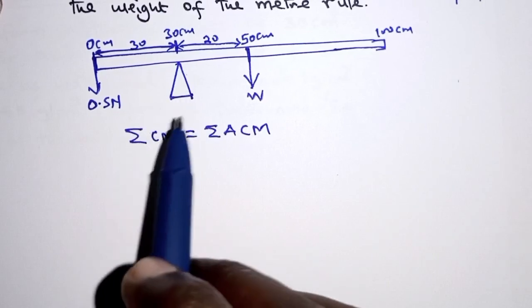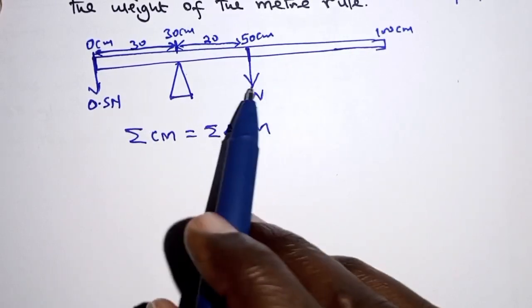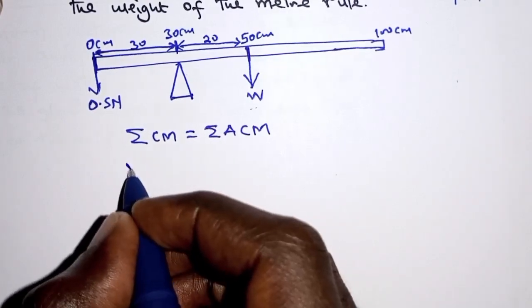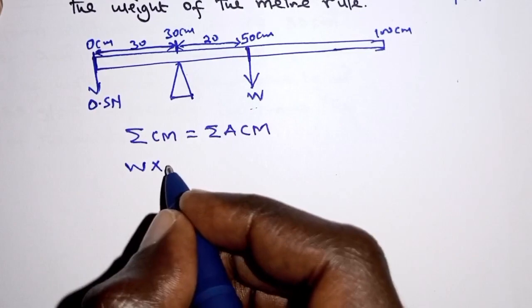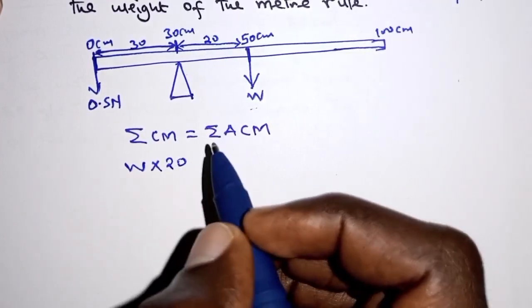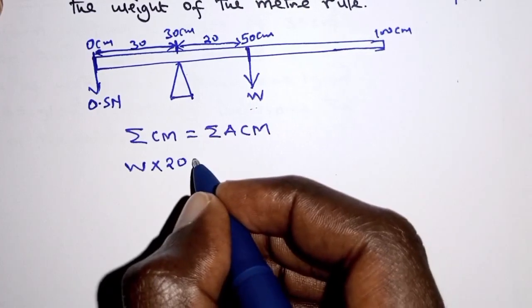So the force that will cause clockwise moment here is the weight W. So we multiply W by the perpendicular distance up to the pivot, which is 20. You don't need to convert that into meters, you can even use it just as it is.